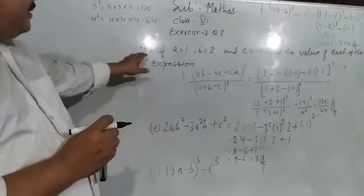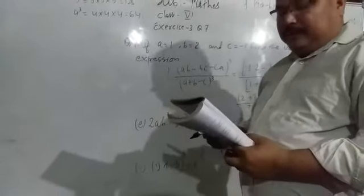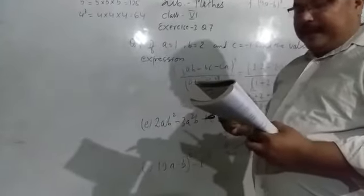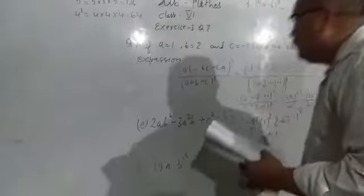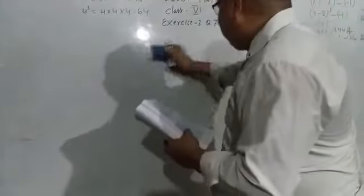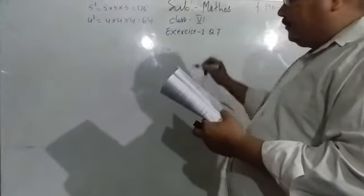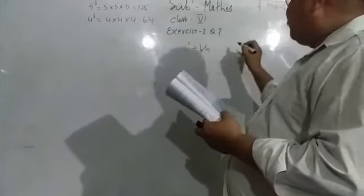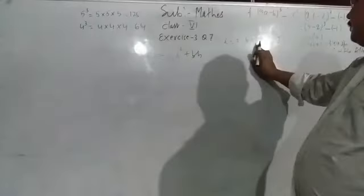Do you understand? These are the examples of question number 7. Now I am going to teach question number 8. Similarly, you are doing these questions for question number 8 also. If L is equals to 3, B is equals to 3 and H is equals to 2, then find the value of the following expressions. Question number 8C: L squared plus BH. Here L is equals to 3, B is equals to 3 and H is equals to 2. Value is given — L means 3, B means 3, H means 2.